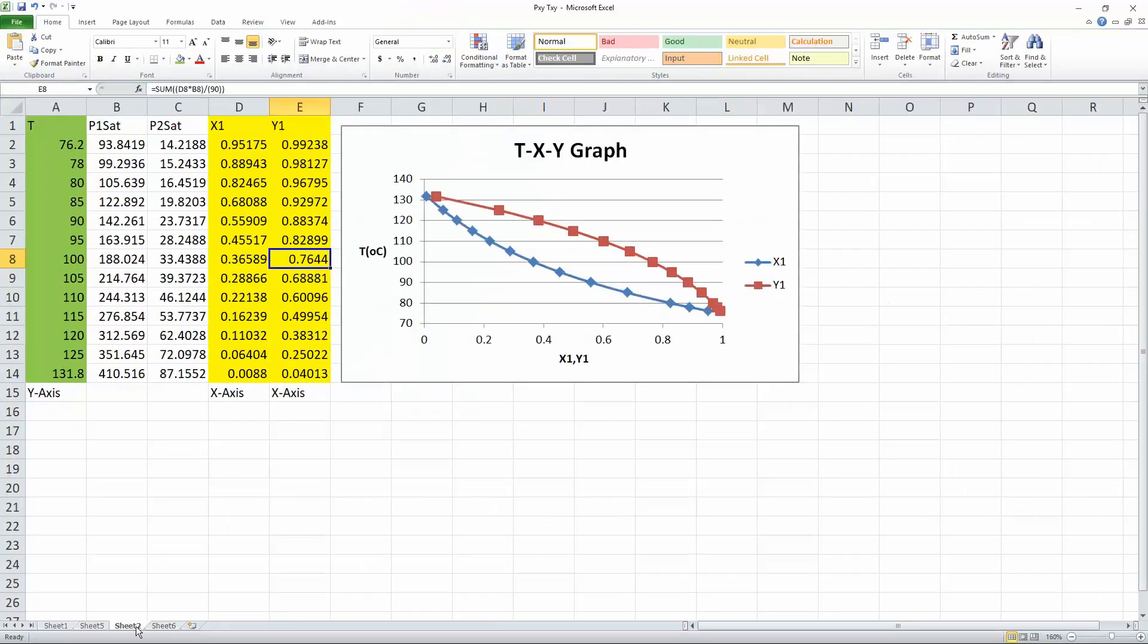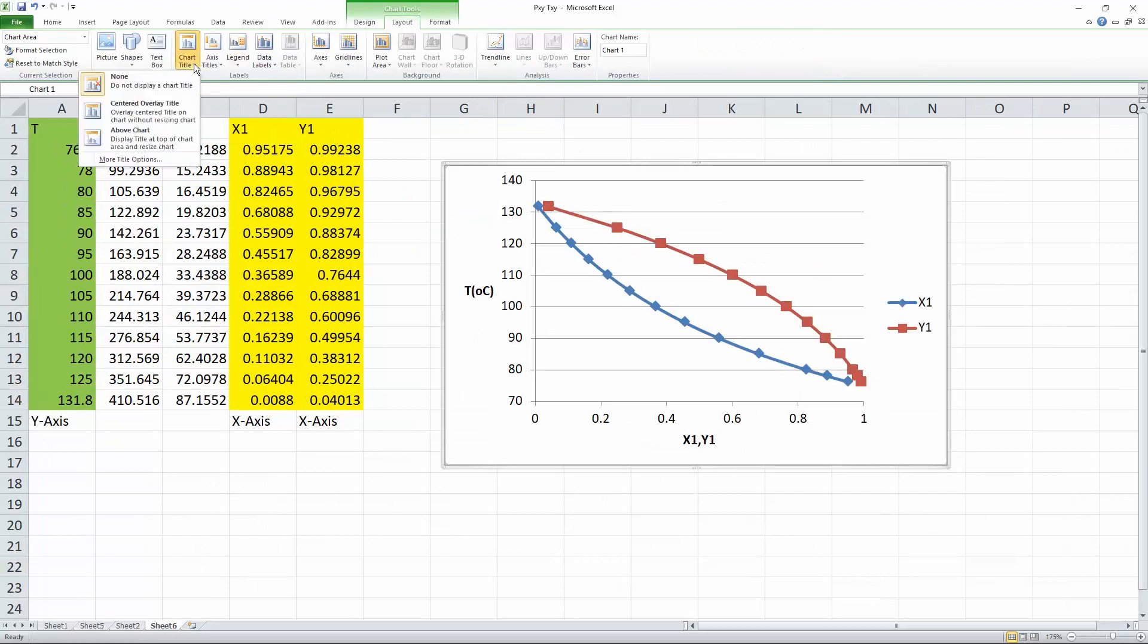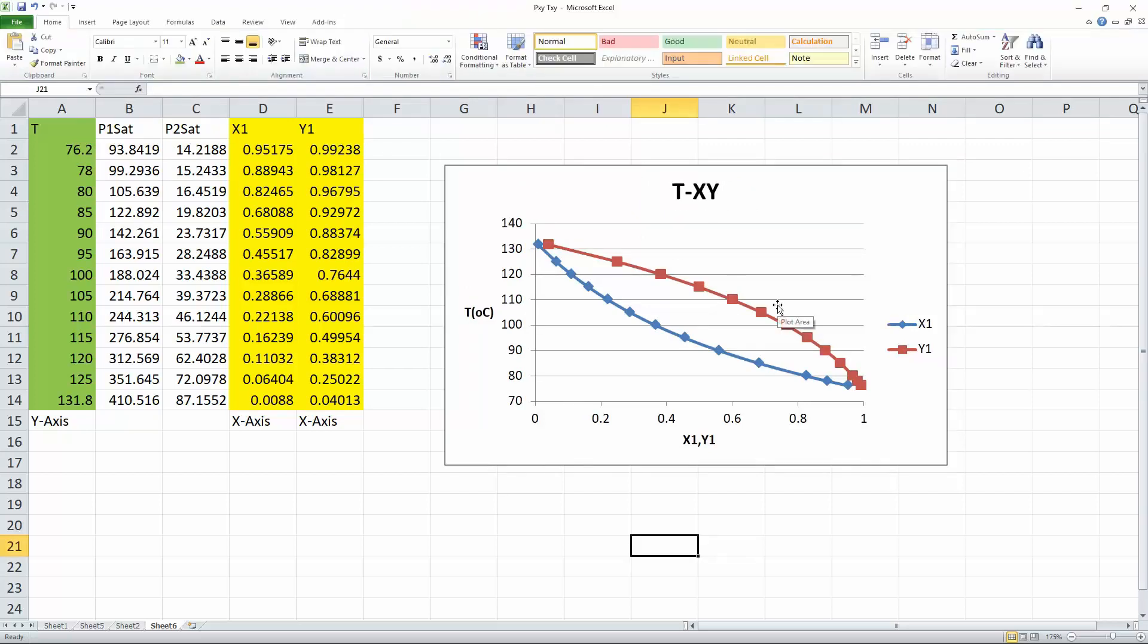What else are we missing? So quick title on top. Again, select the graph, select layout, hit chart title, above chart, and we can quickly call it t dash xy. So now we have a TXY diagram. That's all we need to do to create this diagram in Excel.